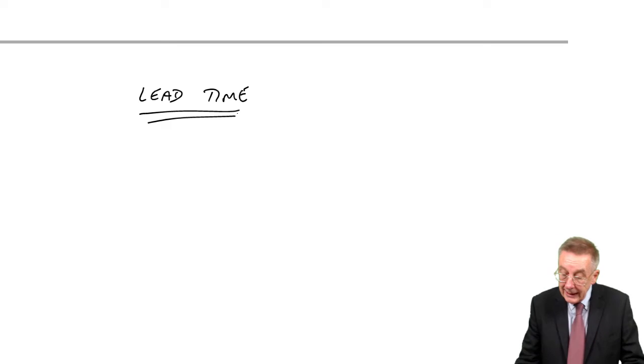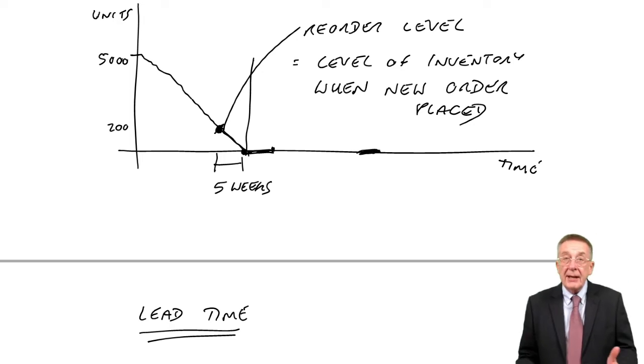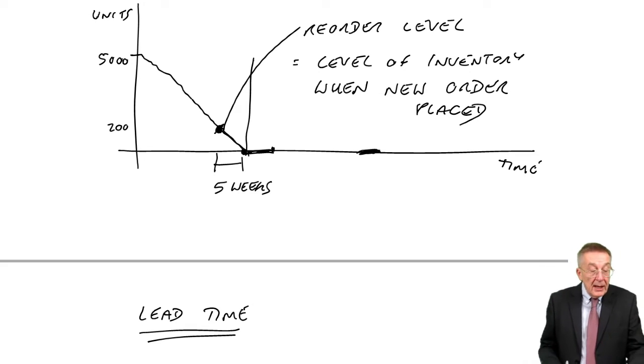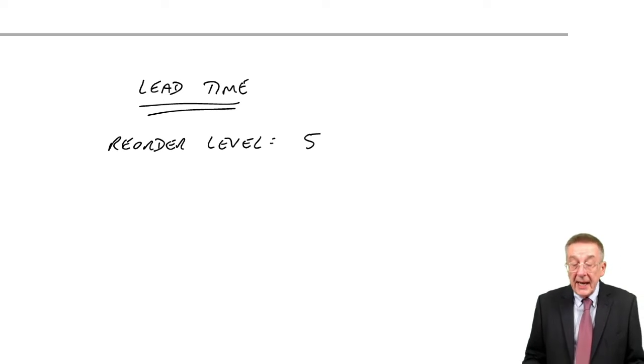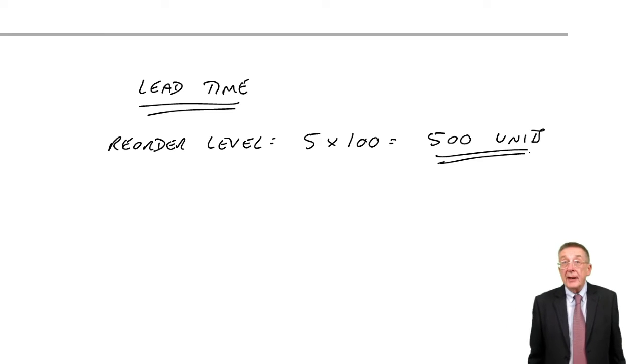So, as I just explained, how many units do we need to still have in inventory when we place the order to avoid running out? Well, surely, if it takes five weeks to get the goods, we need to have enough left when we place the order to be able to supply customers in five weeks. And if the demand is 100 units a week, we need to reorder when there are 500 units left.